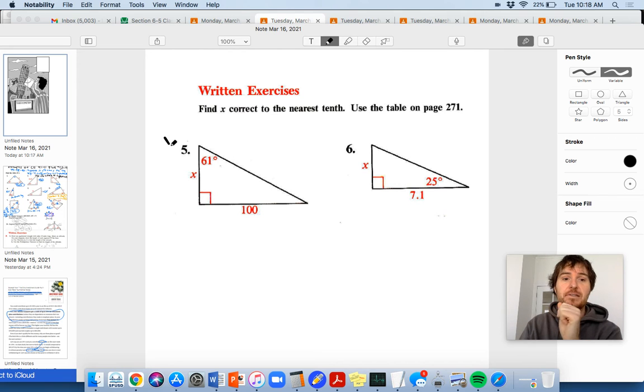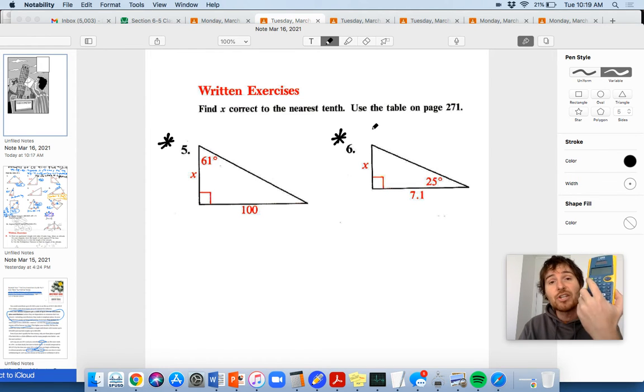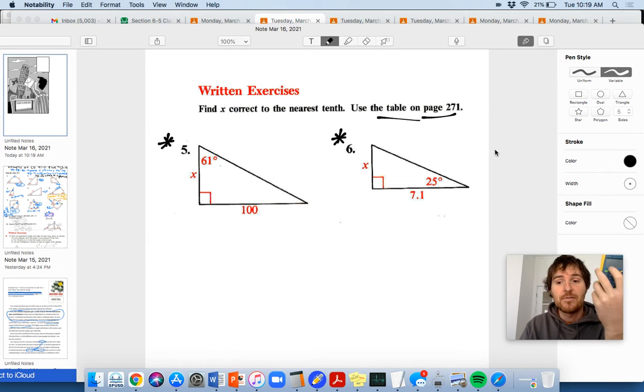But I'm giving you two slices of problems here, this one and this one, because we have different sides given to us as known and then different unknowns. You'll see in a second here. Written exercises, find X, correct to the nearest tenth. Use the table on page 271. We're actually going to use a calculator. I prefer if you use a calculator with this, it's easier. It's better for you long run. And it's going to get you more precise answers because calculators don't round quite as quickly as the trig table on page 271 looks like.